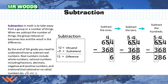Subtraction in math is to take away from a group or a number of things. When we subtract, the group reduces or becomes less, and the result is the difference. Here we have the academic language: the minuend, the subtrahend — that's what you're subtracting or taking away — and the difference. Again, we first subtract the ones, then the tens, then the hundreds. Notice how I'm keeping my place values all in line; that helps reduce confusion when you start doing the math.